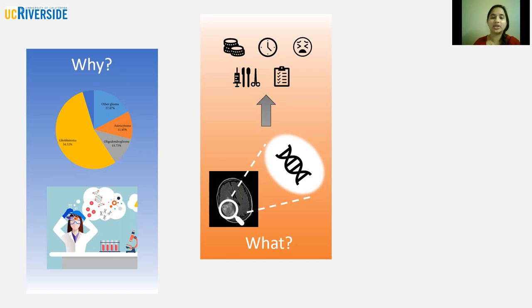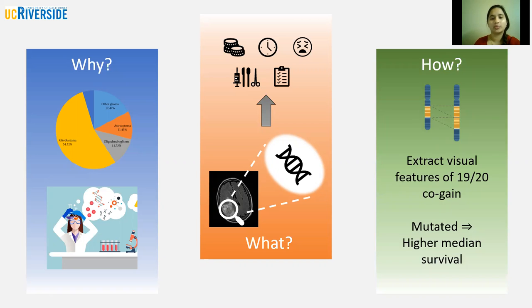In this research, we propose a pipeline to extract visual features of 1920 co-gain, a genetic mutation that is shown to correlate with improved prognosis.